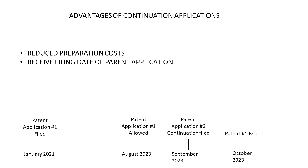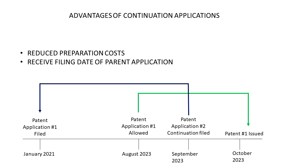Here we are filing the continuation in September of 2023. Then, in October 2023, your first patent issues. The important thing to note is that patent application number two is filed before patent number one issues, and that allows patent application number two to have an effective filing date of the first patent application — January 2021. That serves to limit how much prior art the patent office can use against your second application. References that came out after January 2021 can't be used against you, and that can help improve your chances of getting a second patent to issue.